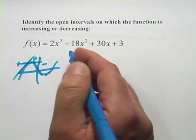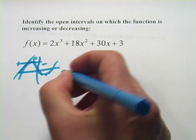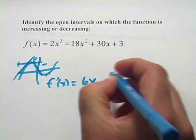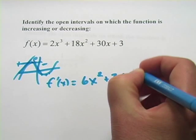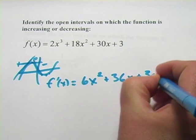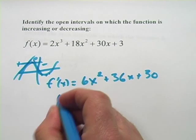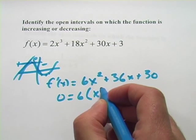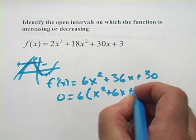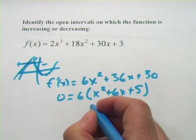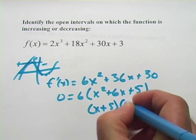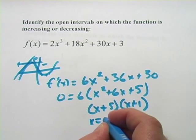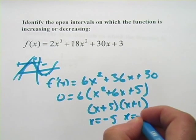So let's put this in practice. I'm going to take the derivative of this function first. So we have f'(x) equals 6x squared plus 36x plus 30. And we'll go ahead and set this equal to zero and solve for the zeros. I'm going to pull a 6 out of here. I've got x squared plus 6x plus 5, and that factors to x plus 5 times x plus 1. So our x values are x equals negative 5 and x equals negative 1.